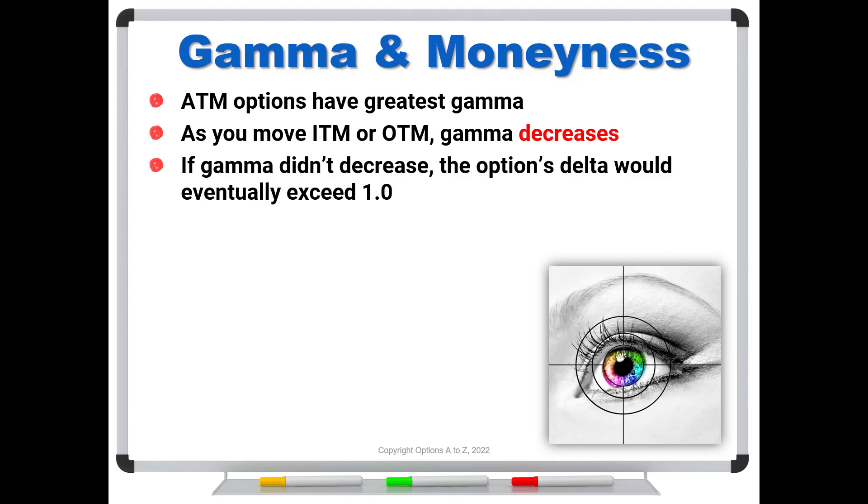And the reason this happens is that if gamma didn't decrease, the options delta would eventually exceed 1.0. You can't keep adding gamma to your deltas and have it level off to 1.0. That's the highest delta you can ever have 1.0 or 100, meaning that that option controls 100 shares of stock. So at some point, you have to start adding zeros, or we're going to exceed one.